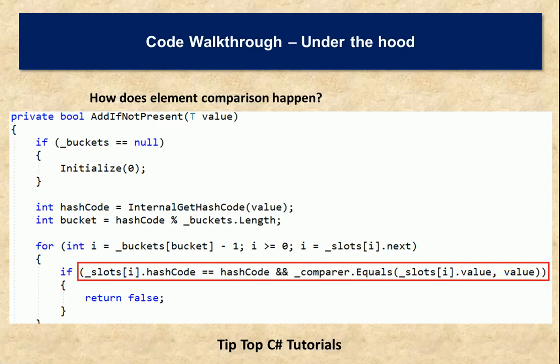Let's look at code snippets to understand how it works internally. For example, when adding an element to a HashSet, it calculates the hash code and initiates the bucket. The highlighted area does the magic of comparison — it gets the hash code and compares it with existing items by looping through each one. There is a comparer which is an IEqualityComparer implementation. The default comparer will compare values for value types, and for objects it compares the object instance — it does not do a member-wise comparison.